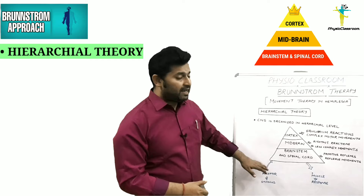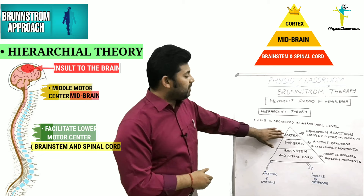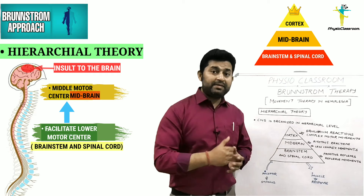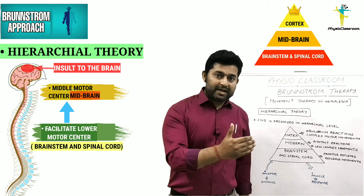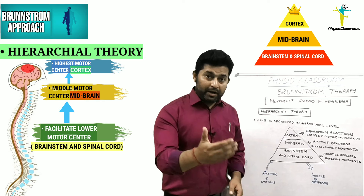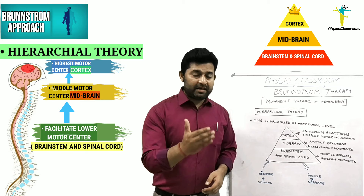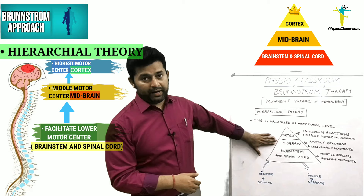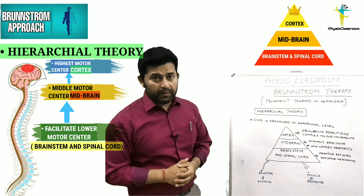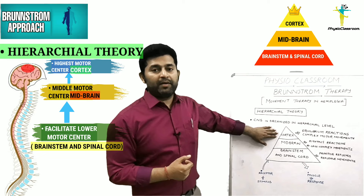This is what Brunnstrom emphasizes as the road to recovery in hemiplegia patients. Following an insult to the brain where no motor movements are being produced, the therapist should first try to facilitate reflexive movements mediated at the brainstem and spinal cord level, followed by more complex movements mediated at the midbrain level. This includes upper limb flexor synergy, extensor synergy, and similarly synergies for the lower limb, which need to be facilitated at the midbrain level. Once the patient gains control over these movement synergies, Brunnstrom recommends progressing towards more complex motor behaviors mediated at the cortical level.